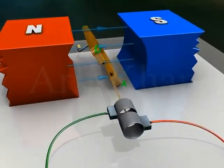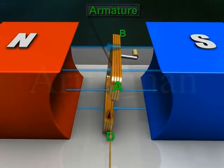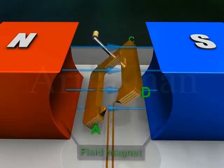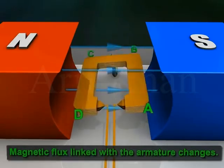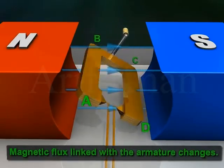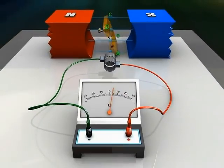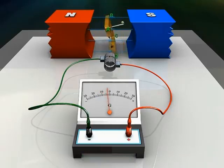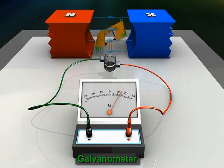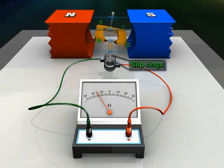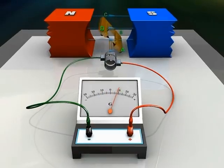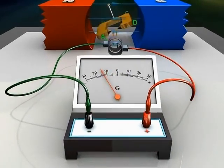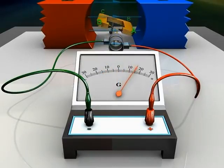When the armature rotates between the poles of the field magnet, the magnetic flux linked with the armature changes continuously. As a result, an EMF is induced in the armature, which in turn produces an electric current through the armature and the galvanometer, through the slip rings and the brushes.